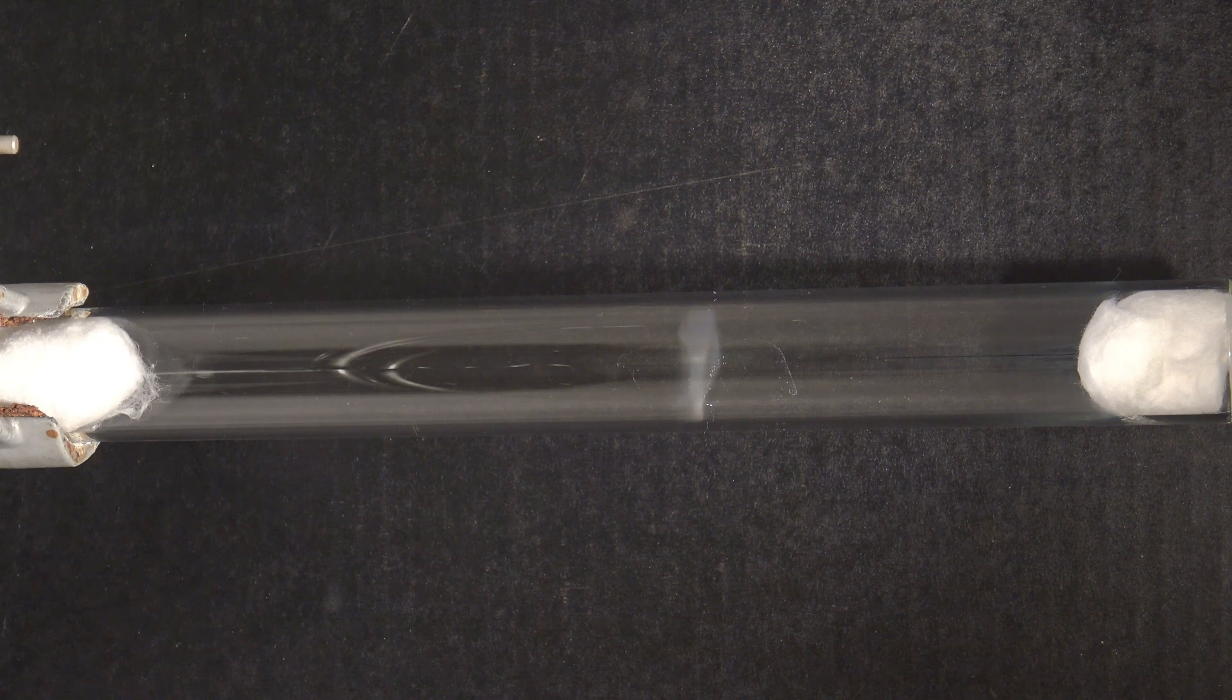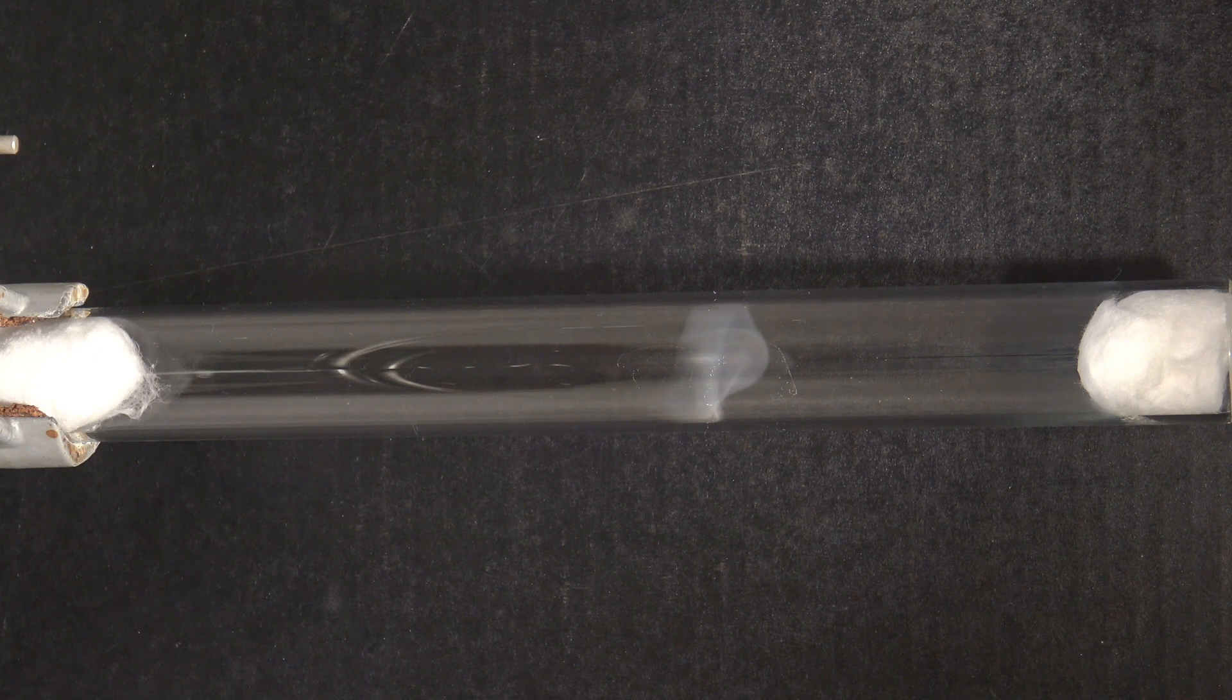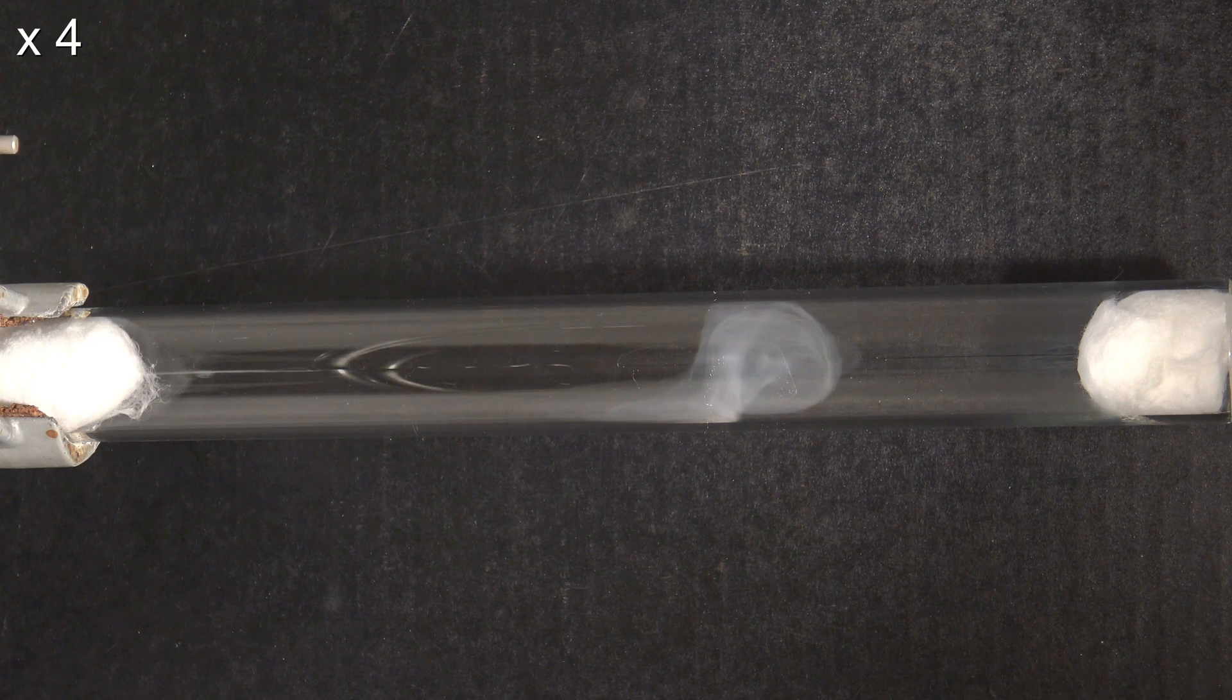Hydrogen chloride is heavier than ammonia and the reaction produces heat, which causes the movement of the smoke. The tube was also slightly tilted, so the cloud moved to the right, which was a bit higher than the left.